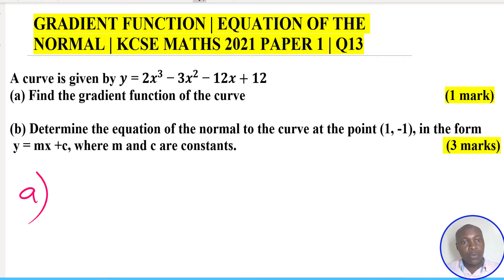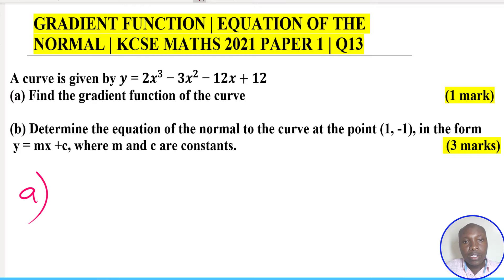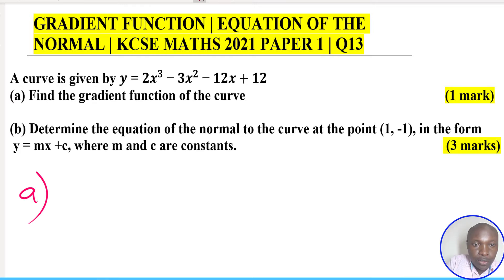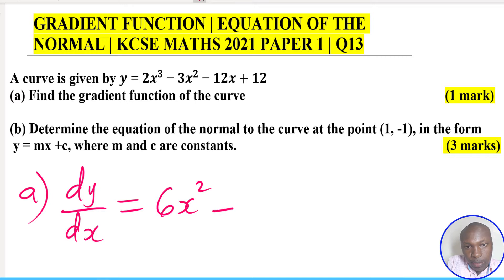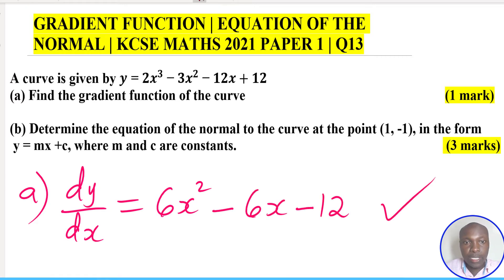For part a, we are supposed to find the gradient function of this curve. To get the gradient function we differentiate the function y with respect to x. Differentiating gives us 6x² - 6x - 12, and that is the gradient function of the curve.